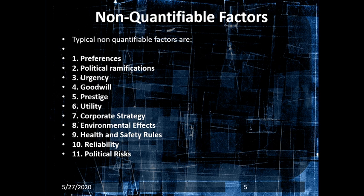These non-quantifiable factors — those that cannot be measured — include: preferences, political remediation, urgency, capital, prestige, utility, corporate strategy, environmental ethics, health and safety rules, reliability, and political ethics.